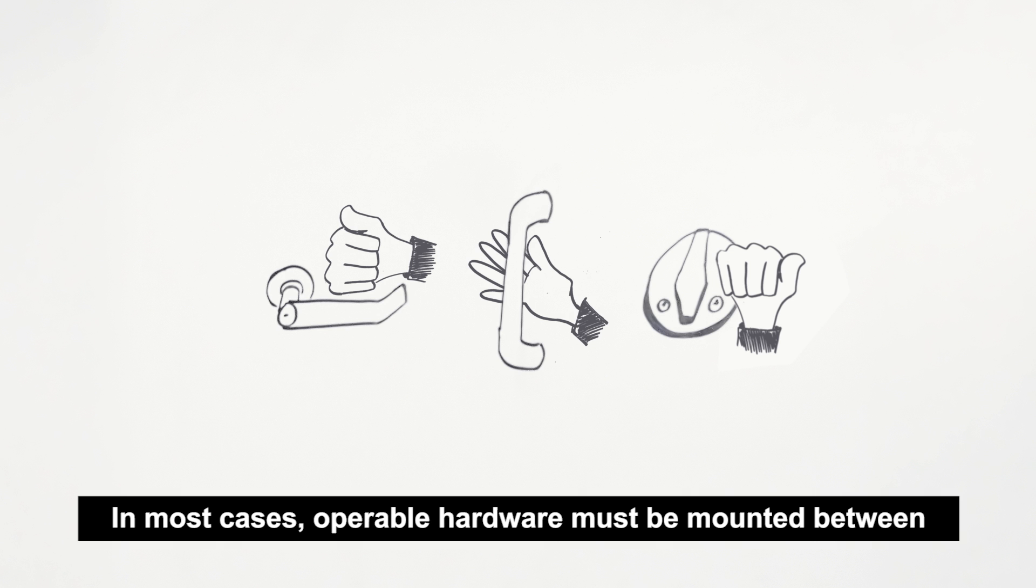In most cases, operable hardware must be mounted between 34 inches and 48 inches above the finished floor or ground.